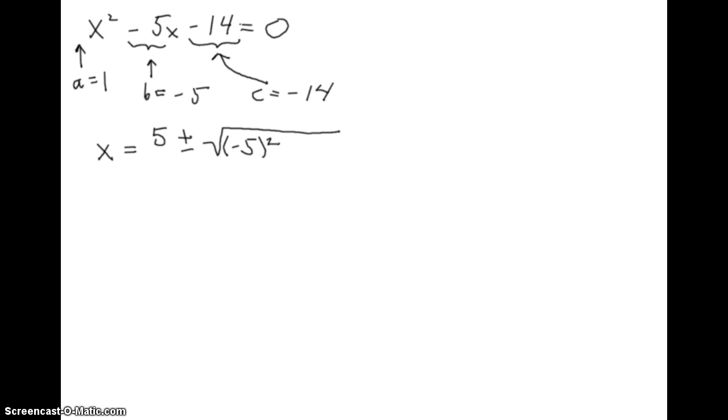It won't really matter with the minus sign here. Minus then 4 times a, which is 1. You almost shouldn't write that times 1. And then times negative 14. And this is all divided by 2 times a, so 2 times 1.